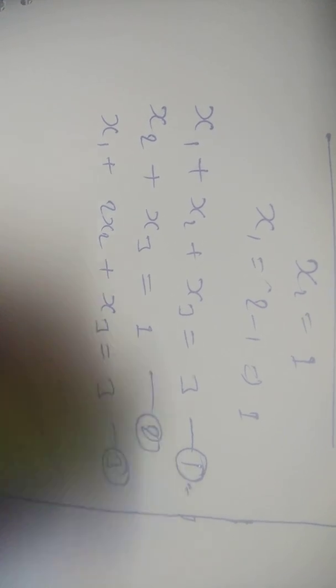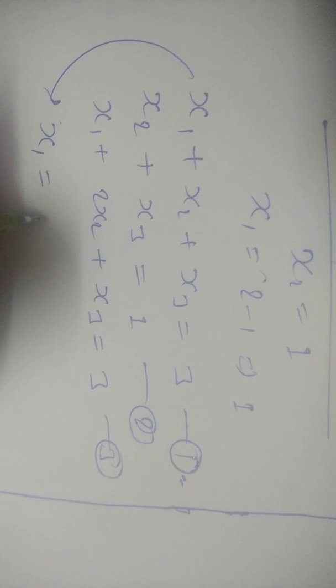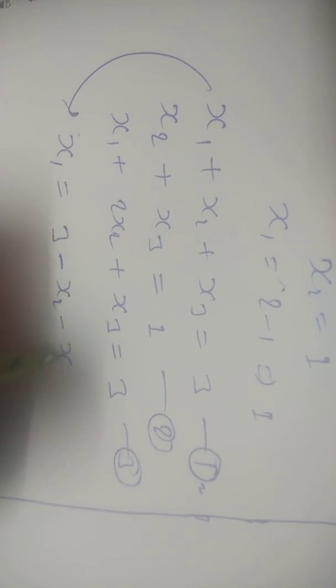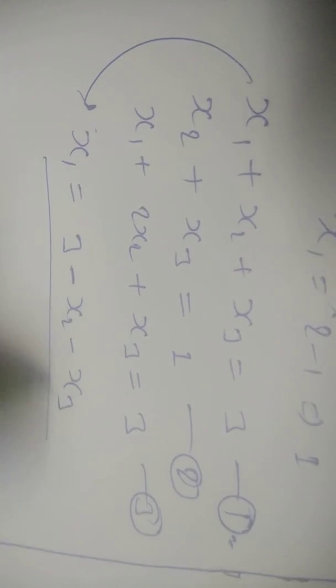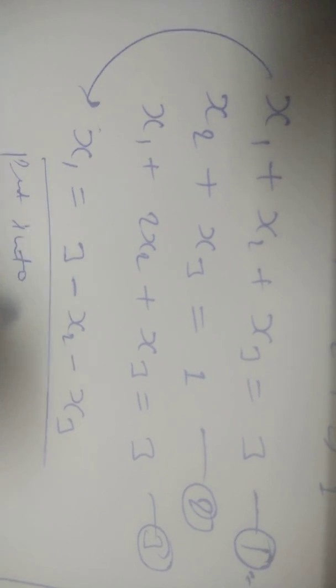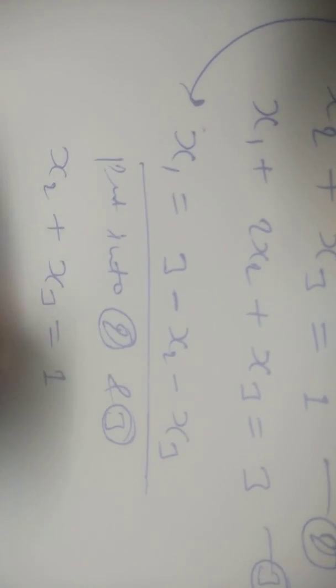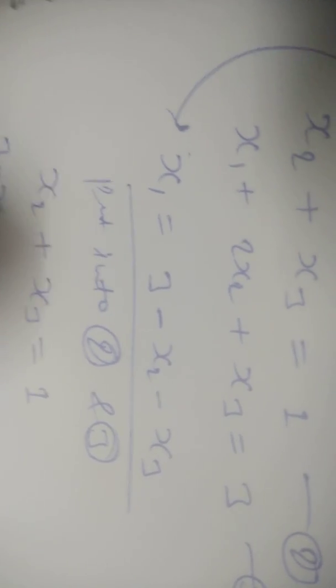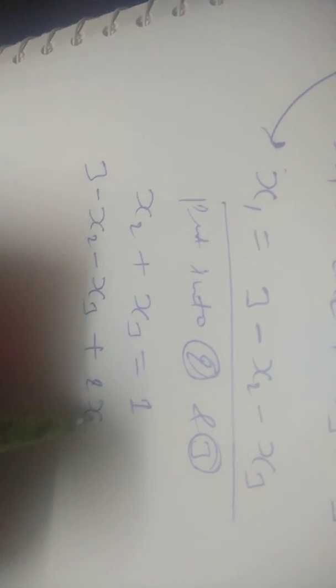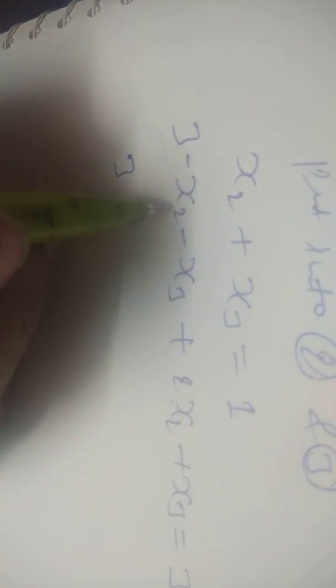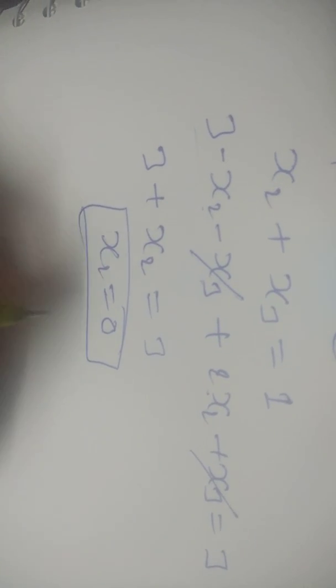From the first equation, x1 is equal to 3 minus x2 minus x3. We substitute this into the second and third equations. The second equation stays as x2 plus x3 equals 1. Substituting into the third: 3 minus x2 minus x3 plus 2x2 plus x3 equals 3, which simplifies to x2 equals 0.